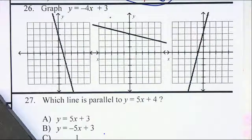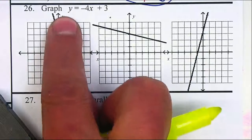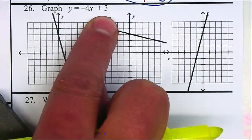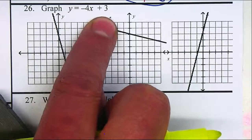So they give you an equation and we need to graph it. Now what's great is that it's already in slope-intercept form because they give you the slope and the y-intercept. So this is slope-intercept form.